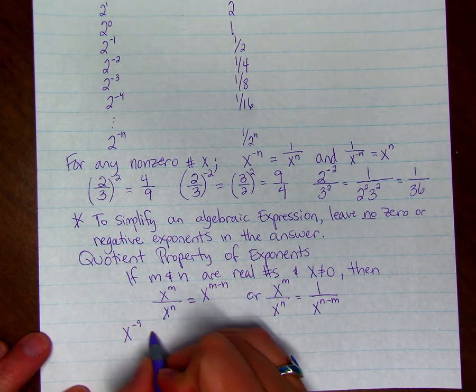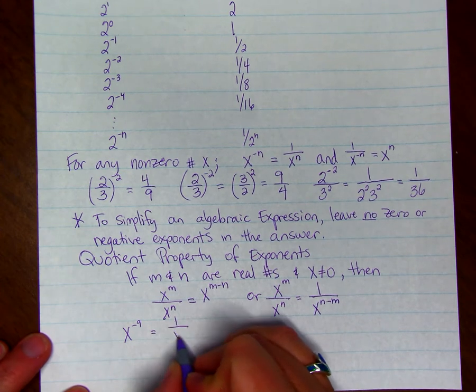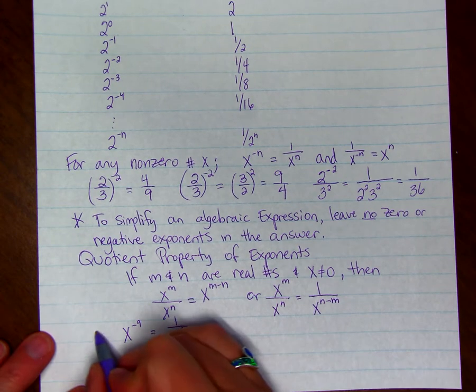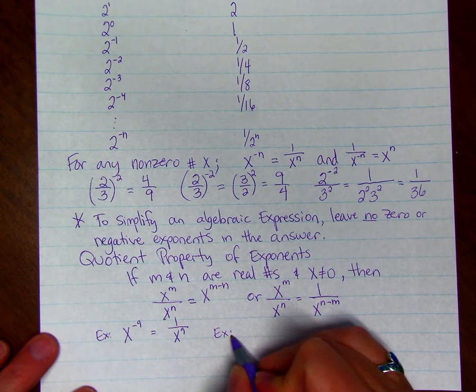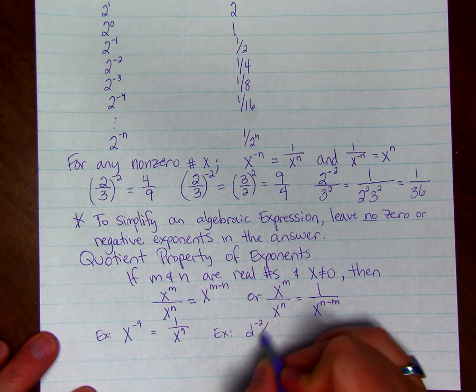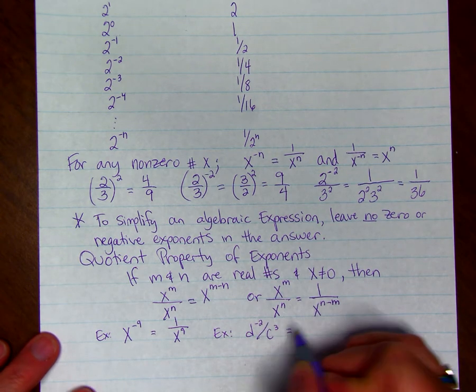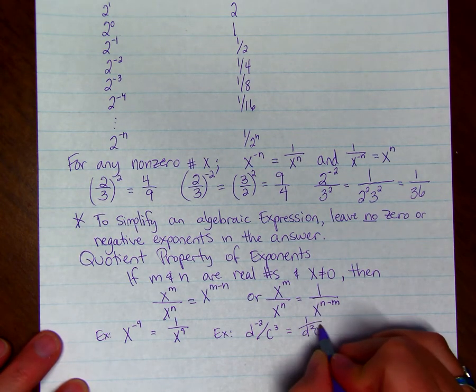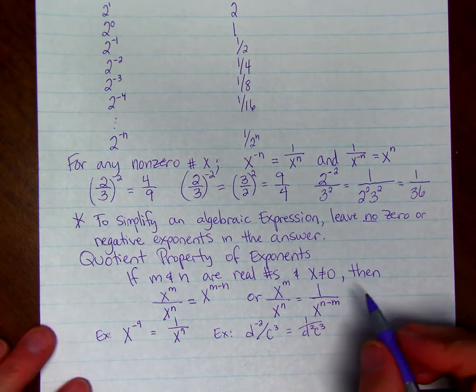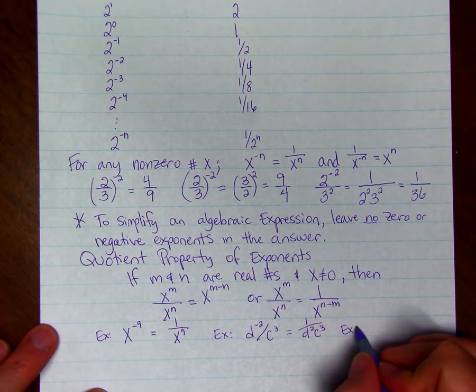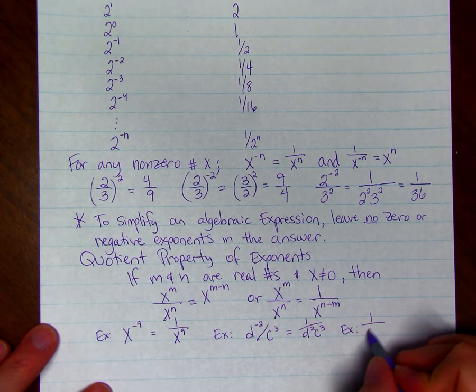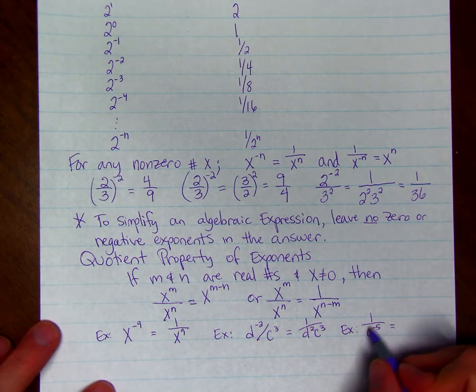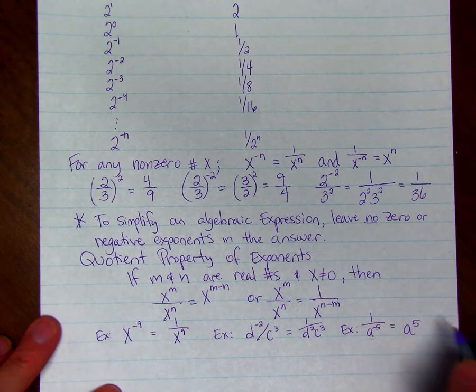x to the negative 9th just equals 1 over x to the 9th. If we had, here's another example, d to the negative 2 divided by c cubed. We can bring d to the negative 2, make it 1 over d squared. So we have 1 over d squared c cubed. Here's another example. 1 over a to the negative 5th. We can take a to the negative 5th and move it to the numerator and make it a to the 5th.